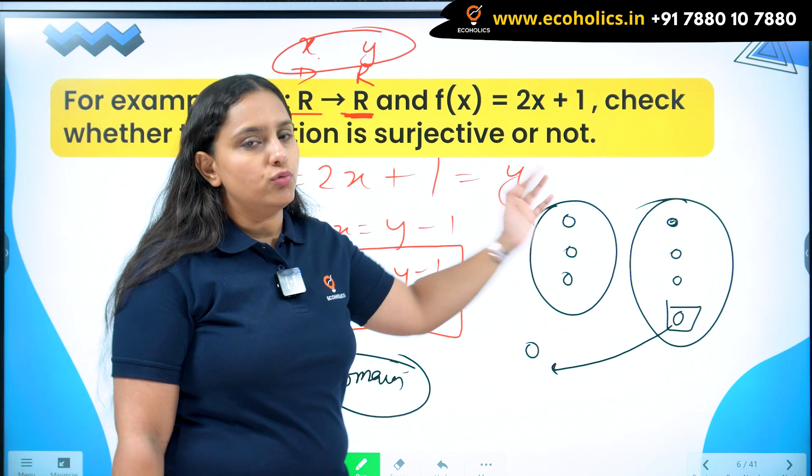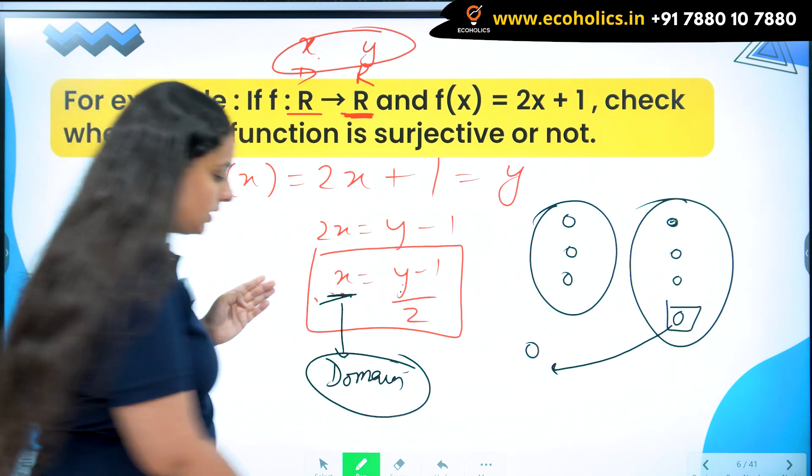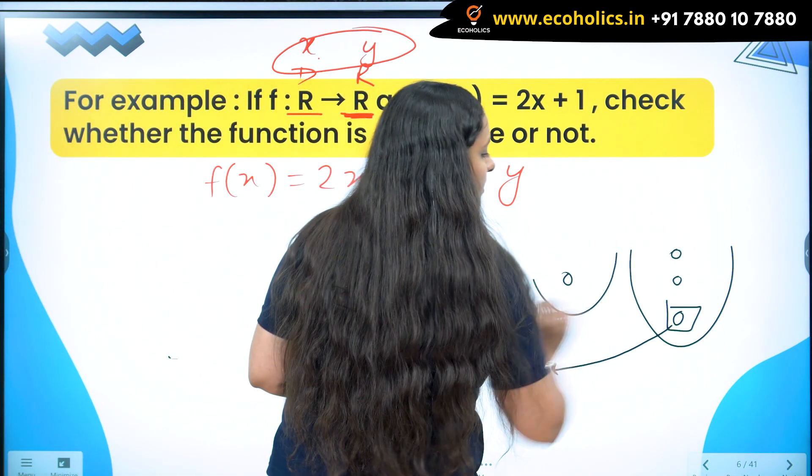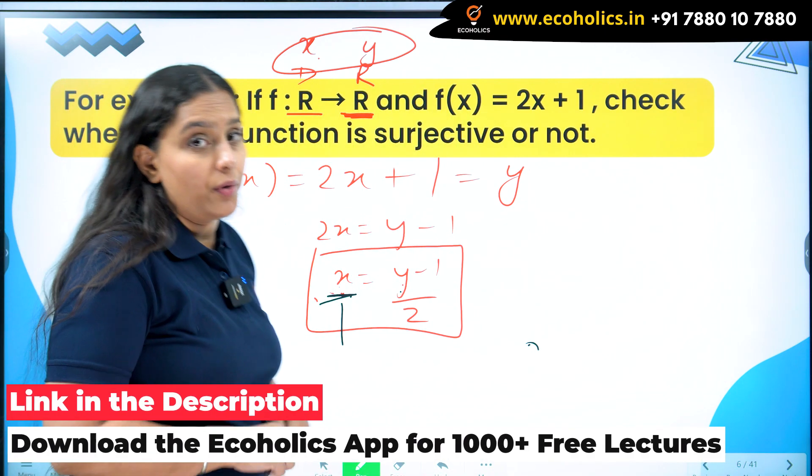You write the function, put it equal to y, convert it into inverse and check for the values in this manner. This is how you can check whether a function is surjective or not.